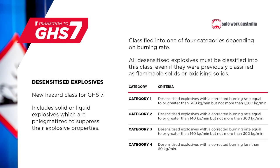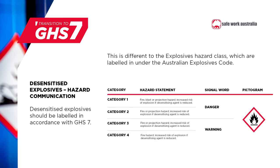The next topic is desensitised explosives, which is a new hazard class. All desensitised explosives must be classified into the desensitised explosives hazard class even if they were previously classified into other hazard classes such as flammable solids or oxidising solids. Desensitised explosives can be solids or liquids and are classified into one of four categories depending on their burning rate. As desensitised explosives are not part of the explosives hazard class, they should be labelled in accordance with the GHS when used, handled or stored in a workplace. This differs from chemicals in the explosives hazard class, which are labelled according to the Australian Explosives Code.